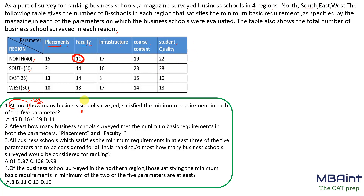For the north region it is 11. For the south region the minimum number is 14, so 11 plus 14 makes 25. For the east region the minimum number is 8, making it 33. For the west region the minimum number is 13, making it 46. So the answer to this question is 46.